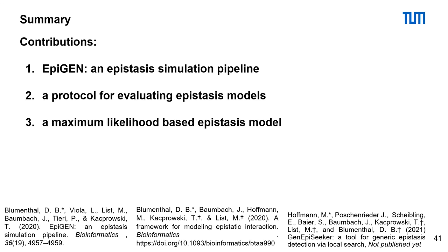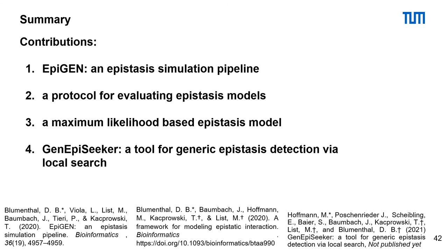Thirdly, a new epistasis model — the maximum likelihood model — which calculates maximum likelihood distributions for each cell of a penetrance table. And lastly, GenEP Seeker, a tool for generic epistasis detection via local search. GenEP Seeker builds a PPI-based SNP-SNP interaction network and uses local search to find epistatic interactions which could be biologically meaningful.